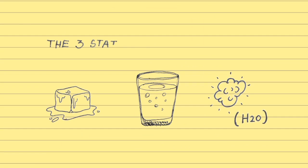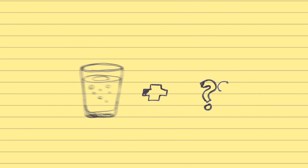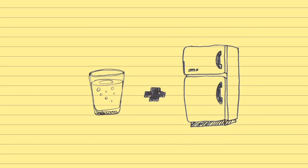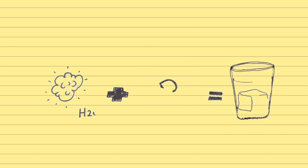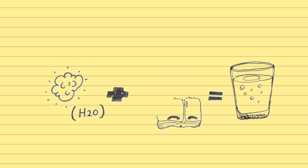Water can exist in three states: solid, liquid, and gas. When we want to get ice from water, we put the water in the freezer and cool the temperature down and we get ice. So how do we get water from gas? We use the same process — we just need to take the water vapor and cool the temperature down.